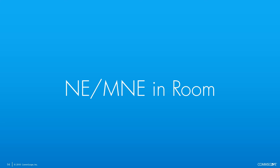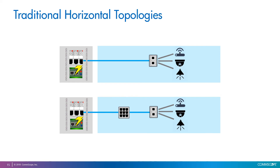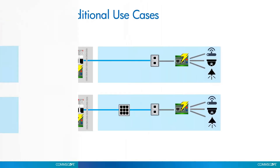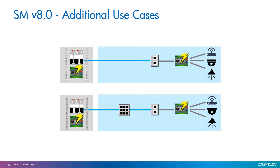The next new feature is the ability to add network equipment and managed network equipment objects directly in rooms. Until now these objects could only be placed in racks or cabinets. Here we see two typical horizontal topologies that System Manager has supported since the beginning — in both cases the switch appears in a rack far from the devices connected to it. Here we see two new topologies supported: at the top, a switch placed in a room connected to a faceplate, with multiple devices connecting to the switch ports, and the faceplate connection serving as an uplink to a panel and another switch in the rack.